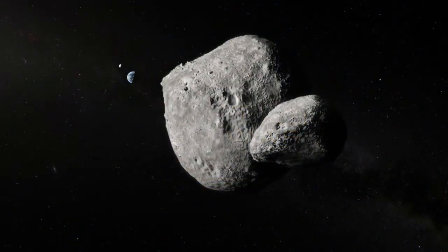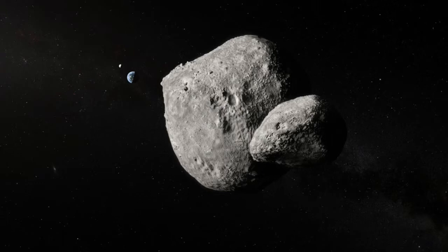This is asteroid 2019 OK. What is so special about this asteroid? Well, it came very close to hitting our Earth, about 45,000 miles away, which is one-fifth the distance to where the Moon is.